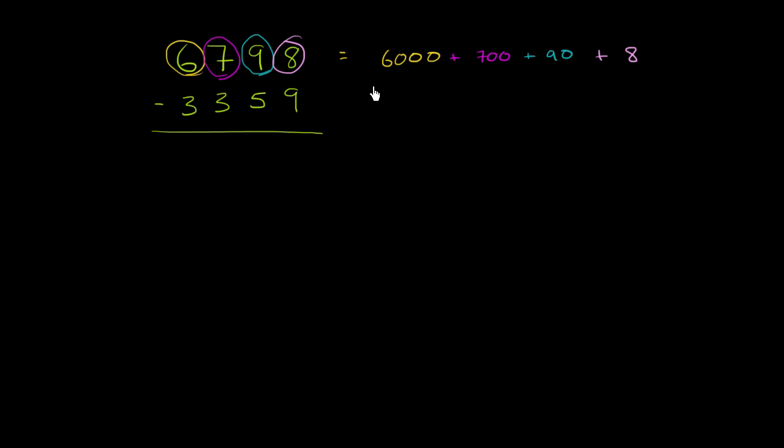So minus, so I could subtract each of the places. So I could say this is going to be minus 3,000. So minus 3,000 minus 300 minus 50.